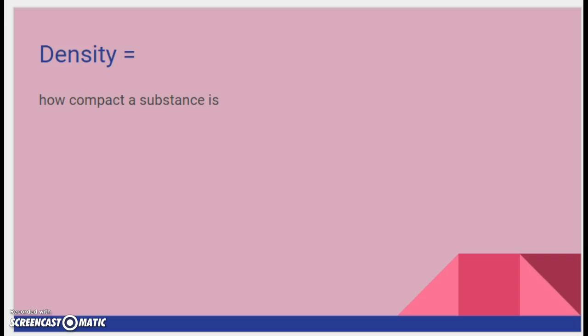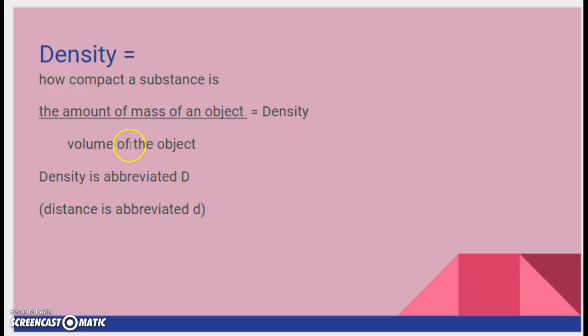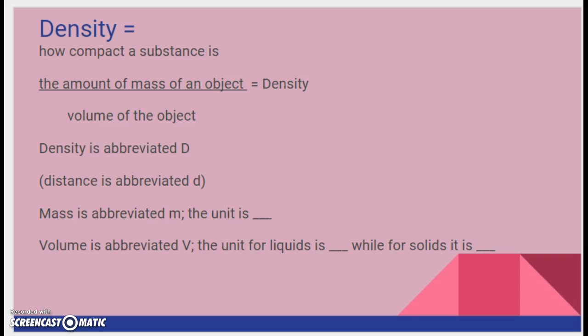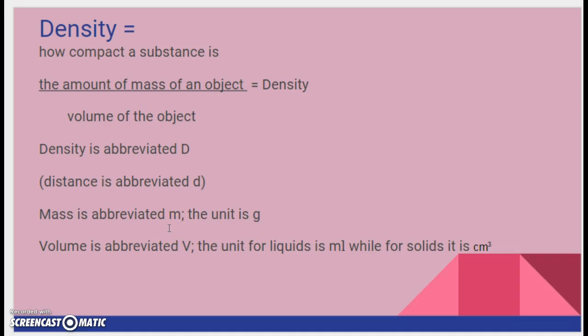So density, again, is how compact a substance is. We have our equation. The amount of mass of an object divided by the volume of the object equals the density. Density is abbreviated capital D. Because distance is lowercase d, so it has to be a capital D. Mass is abbreviated what? And volume is abbreviated what? Mass is abbreviated lowercase m. Volume is abbreviated capital V. And what is the unit for mass? And what's the unit for volume for liquids? And what about when it's solid? These are things you should know. So if you don't, make sure you write them down so you can practice them. We use grams to measure mass. For liquids, we use milliliters. And for solids, we could use a length cube, like centimeters times centimeters times centimeters.